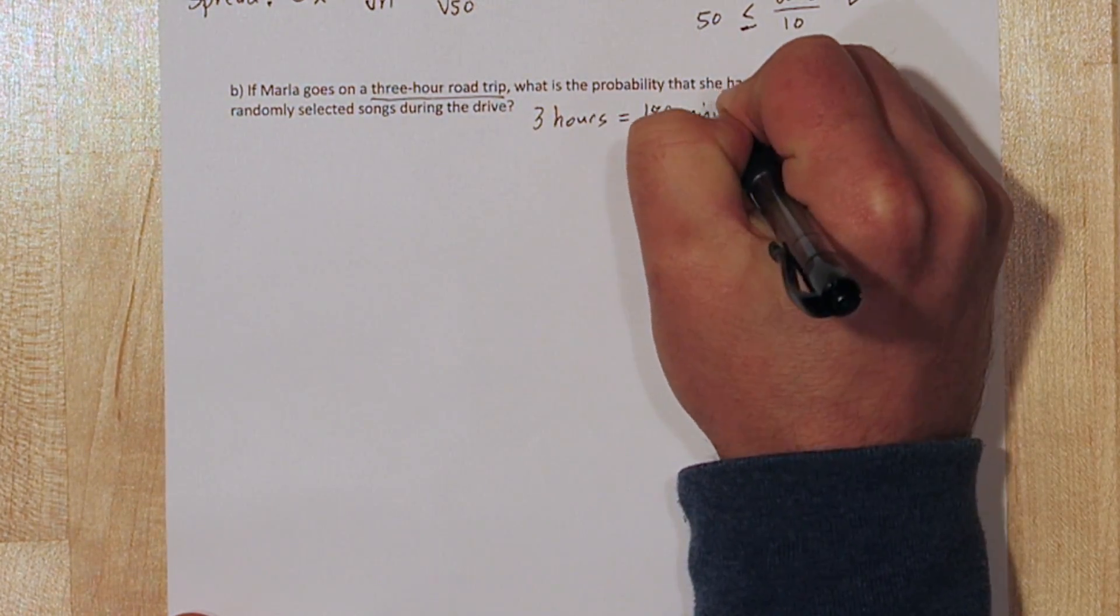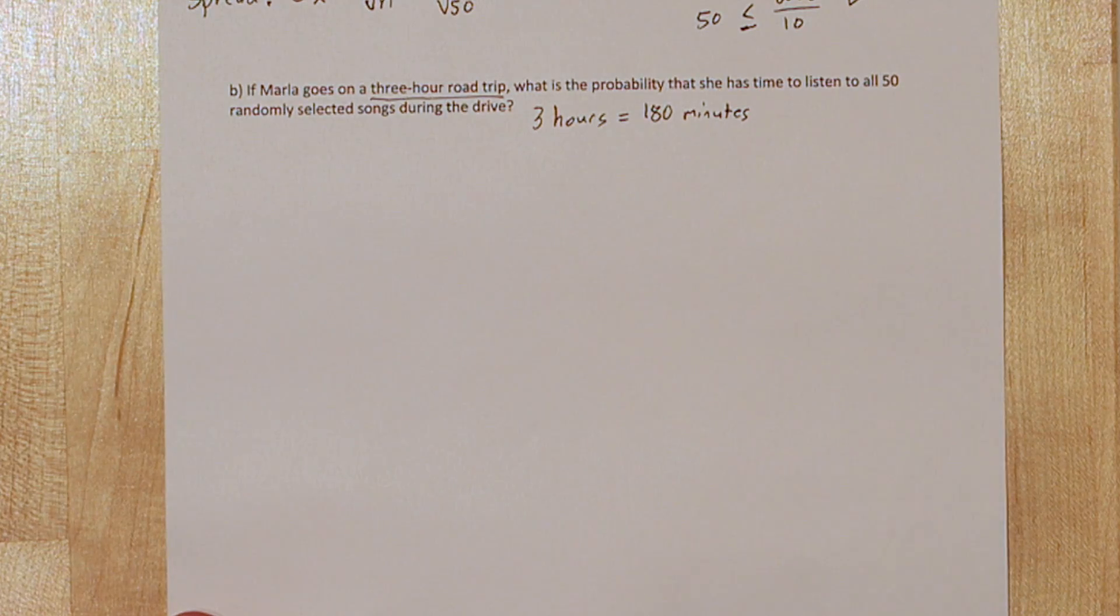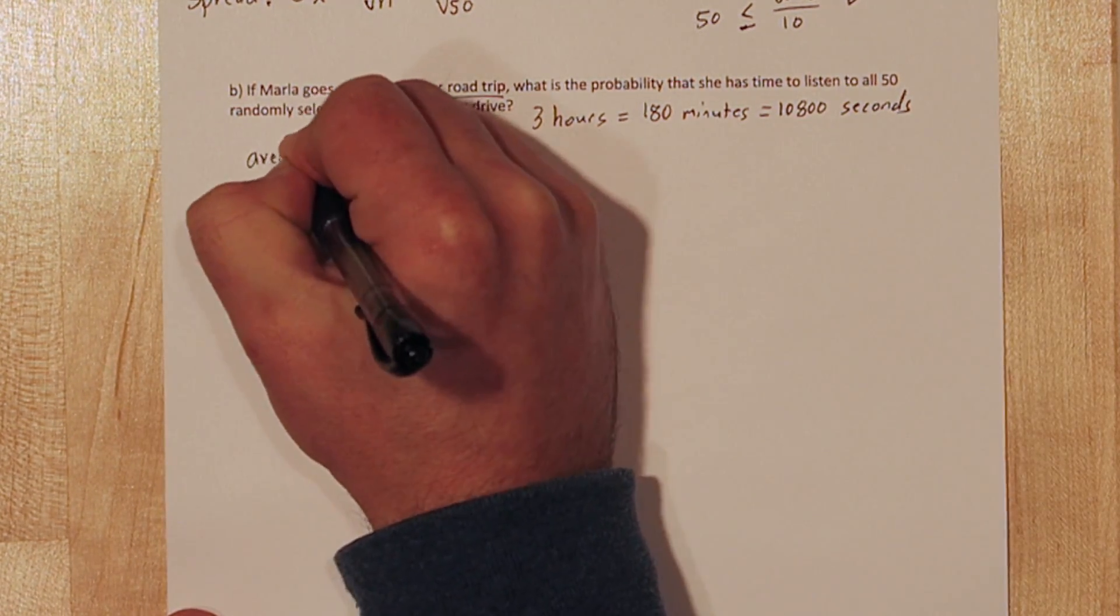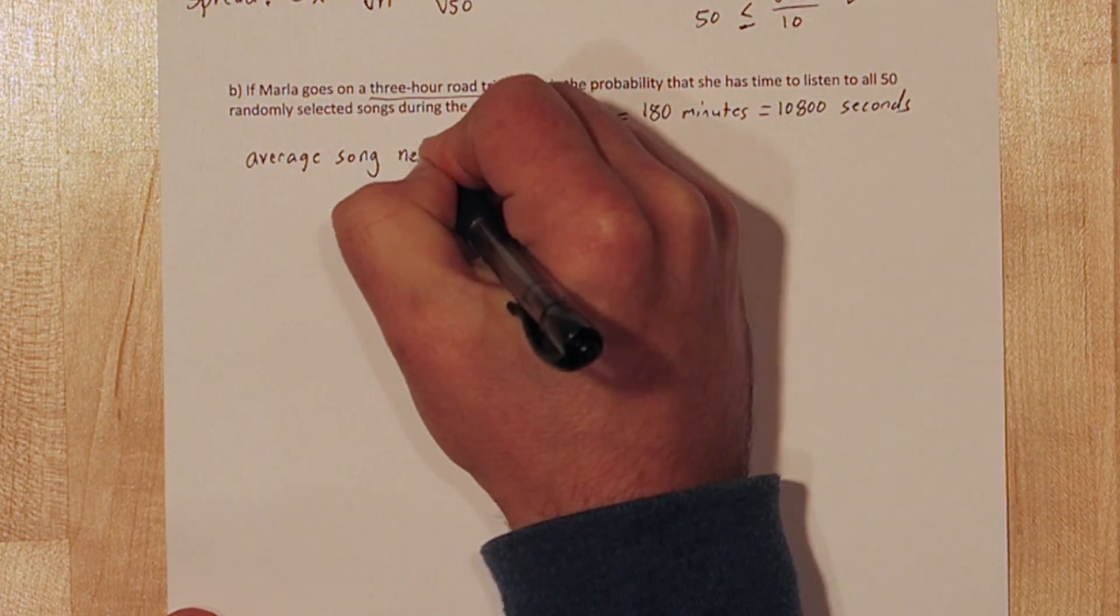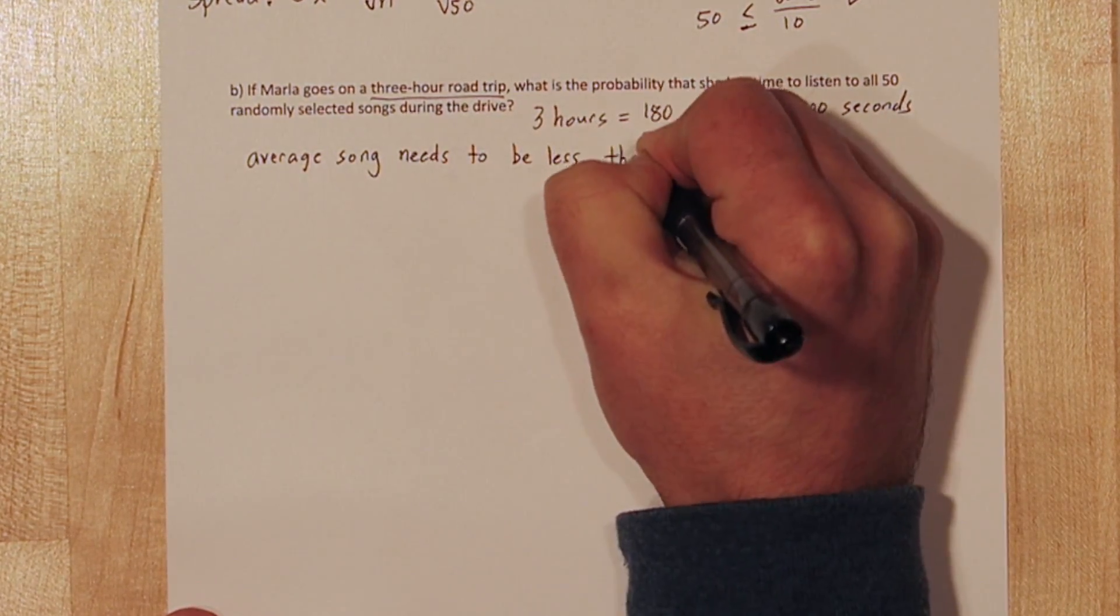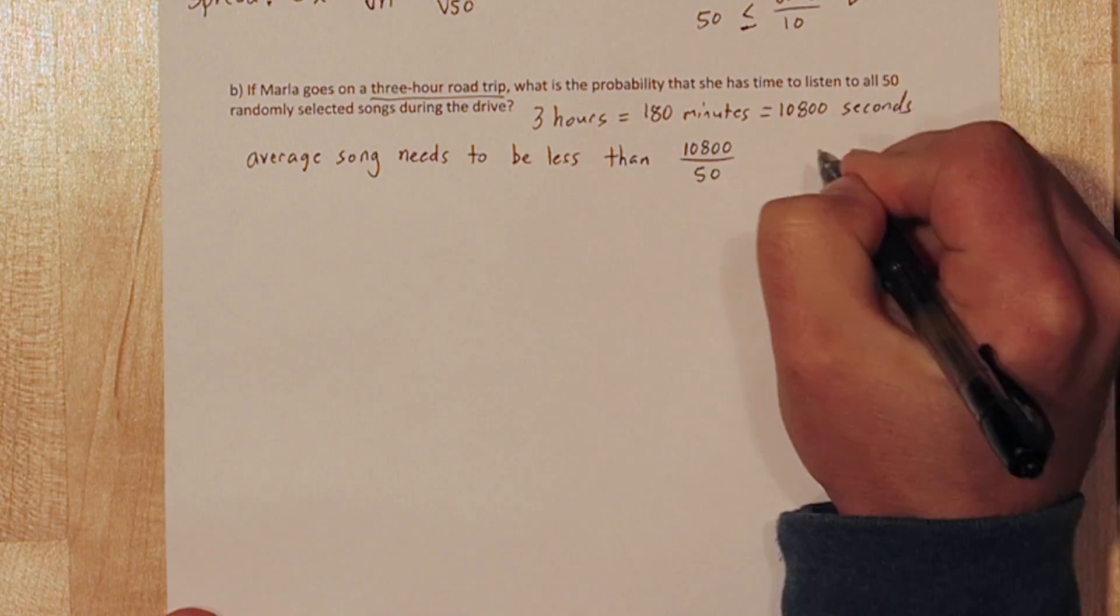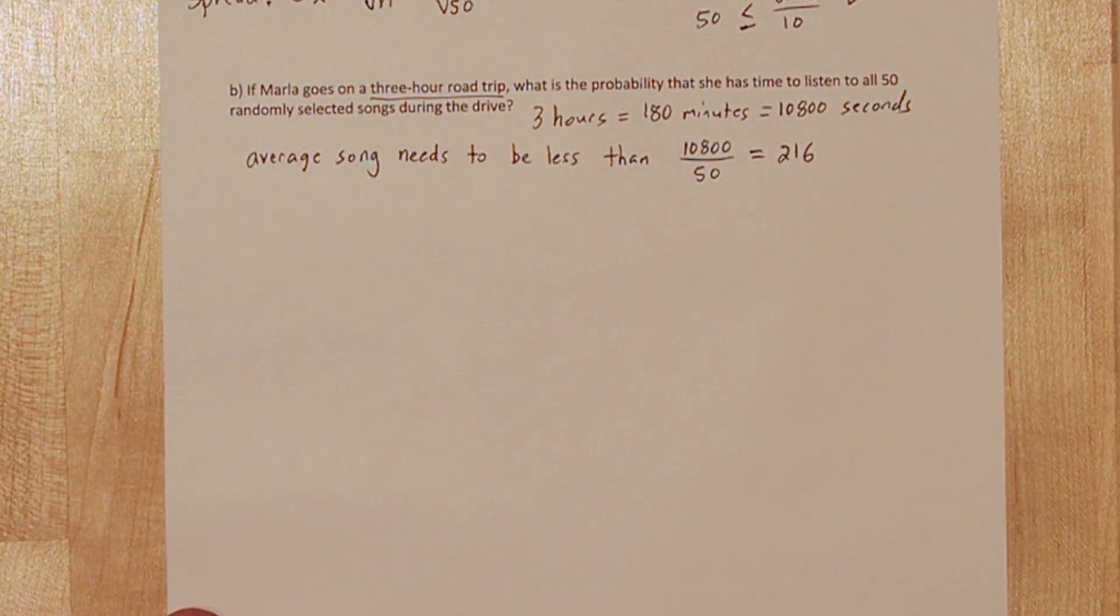In 3 hours there's 180 minutes, and that turns out to be 10,800 seconds. Since all 50 songs have to fit within that 10,800 seconds, we need our average song length to be no more than 216 seconds.